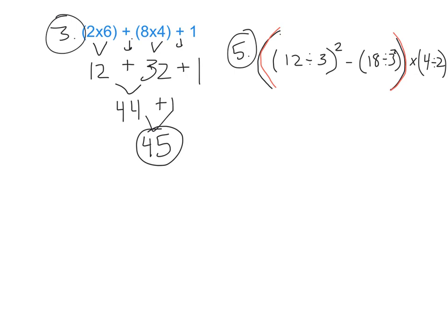I see a set here and a set here, so I do the inside first. The exponent is outside, so I leave that. 12 divided by 3 is 4; the inner parentheses are gone but the exponent remains. Then for 18 divided by 3 to the second power, I decide whether to do 18 divided by 3 or 3 to the second power first.